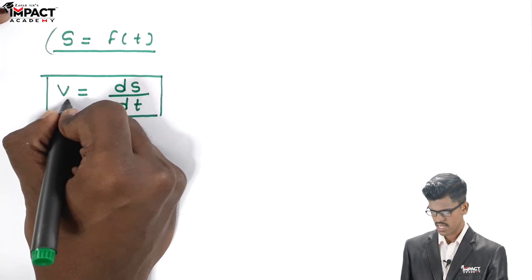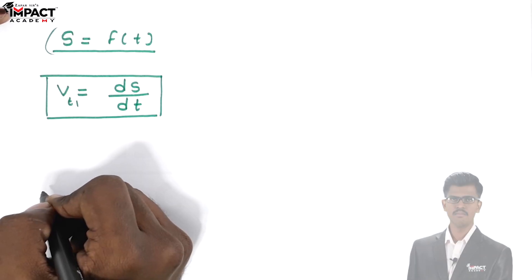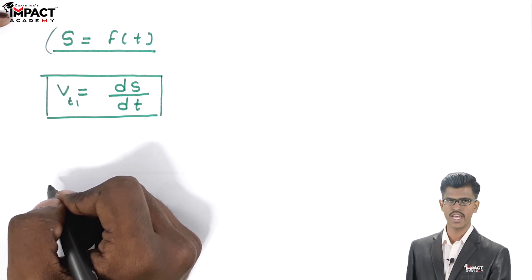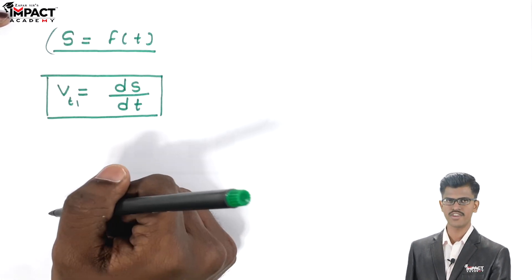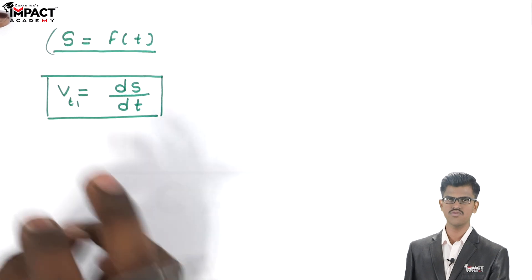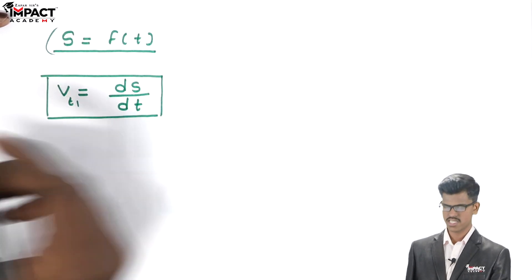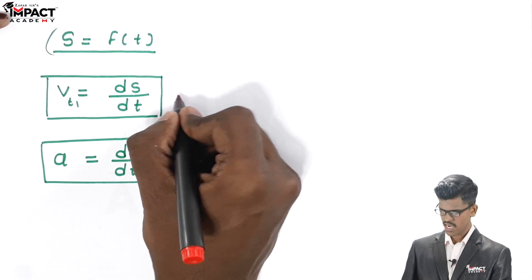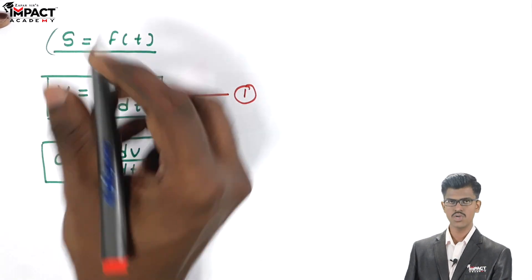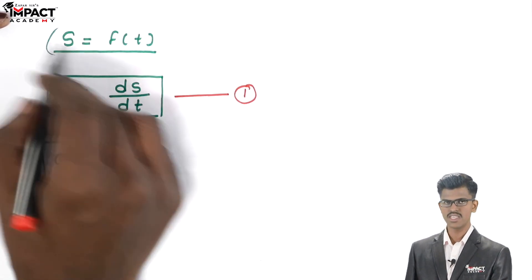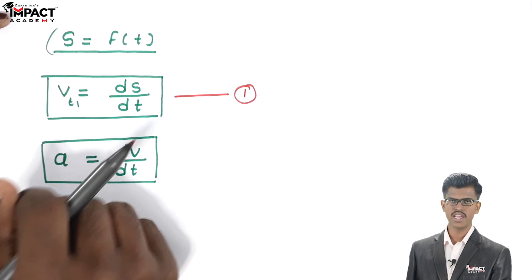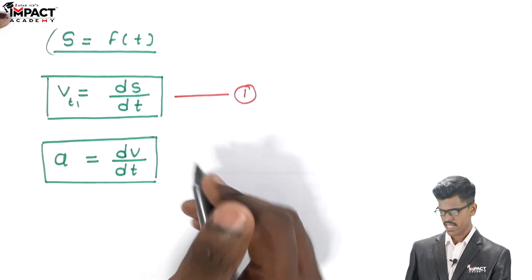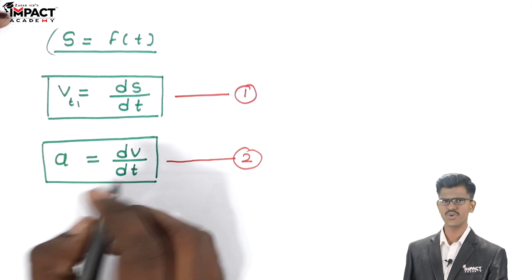At a particular instant, let's say T1, by the definition of acceleration — the rate of change of velocity with respect to time — we get the velocity in the form of T. If we differentiate this velocity with respect to time, we get acceleration. So the first equation is V equals dS upon dt. If we differentiate velocity with respect to time again, we get acceleration at that particular time instant.